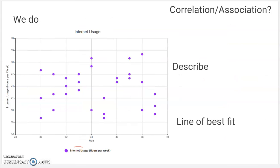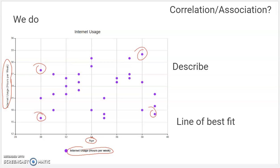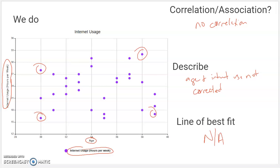This next one has neither. The number of hours of internet used per week correlated with age — does how old you are have anything to do with the amount of internet you use? Well, it looks like probably not. There's older people with a lot of internet, younger people with a lot of internet, older people with a little internet, younger people with a little internet. Doesn't seem to have anything to do with each other. So age and internet use are not correlated. Older doesn't mean more internet use, younger doesn't mean more internet use. They're just not really related, so you can't make a line of best fit. That only works when there is a correlation — if there's no correlation, you can't make a line of best fit.